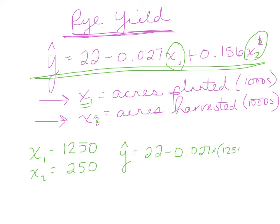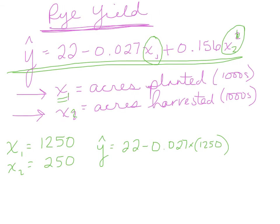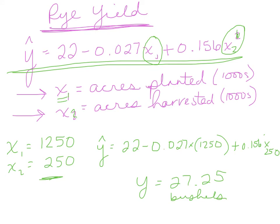You don't need parentheses in your calculator; I'm just using them to separate the terms. Plus 0.156 times your x2 value, which is 250. Times 250. Hit enter in your calculator and you get an answer of 27.25 bushels per acre.